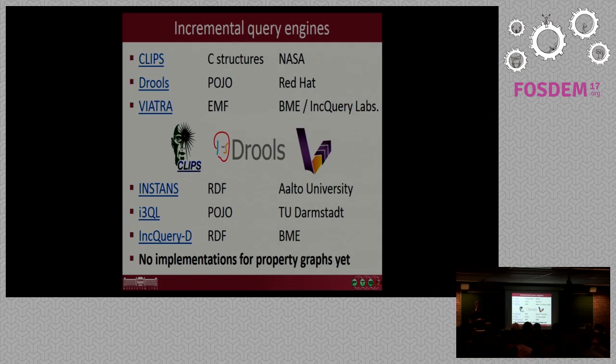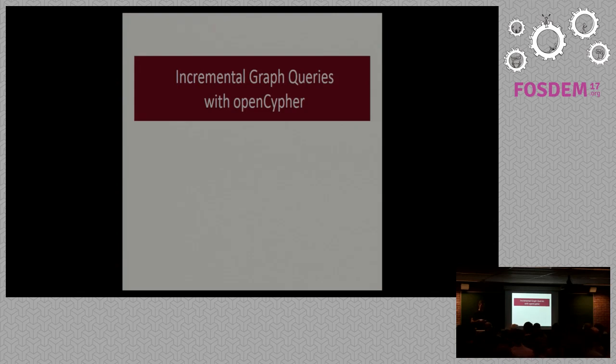So, these are the academic and industrial tools. And we have some very prototypical tools like Instans, which works on RDF and is developed by Aalto University. We have a Scala-based solution called i3QL developed by the Technische University at Darmstadt. And we have IncQuery-D, which was my early PhD project in my university. So, what we don't have is a property graph-based implementation. So, as far as we know, there are no incremental query engines for property graphs yet. But this is about to change.